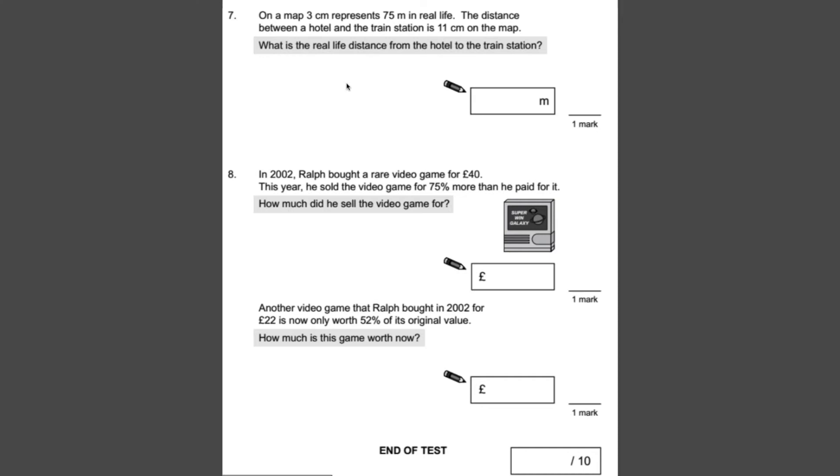Number 7, on a map, 3 centimetres represent 75 metres in real life. The distance between a hotel and the train station is 11 centimetres on the map. So what's the real life distance from the hotel to the train station? When you get questions like this, it's always good to work out what 1 unit represents. So what does 1 centimetre represent? We know that 3 is 75, so what we need to do is divide 75 by 3, and that will give us how much 1 centimetre is worth. So 1 centimetre is 75 divided by 3, which is 25. So 1 centimetre is worth 25 metres. Now we can times our 1 centimetre by 11, so we can get 11 centimetres worth of metres. So we need to do 25 times by 11, which is 275 metres.